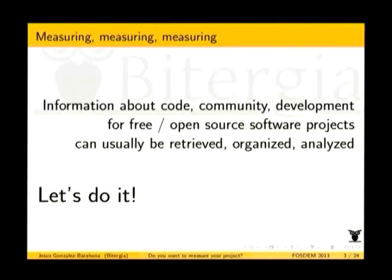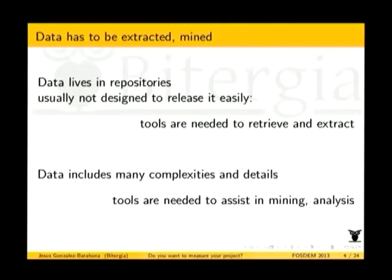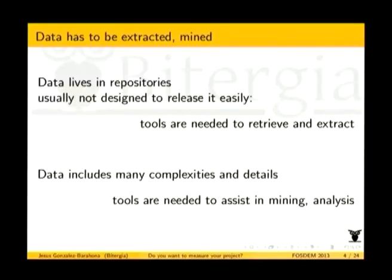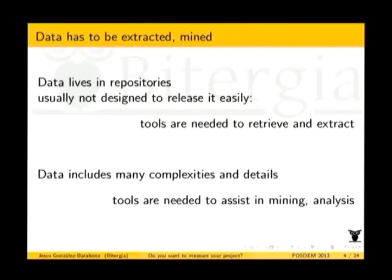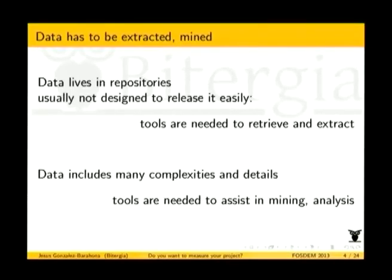The problem with data in free software repositories is that first of all it lives in repositories which were not designed to be mined — they were designed to do development — and getting the information out of them is not always easy. Depending on the repository, in some cases it's pretty easy, in others it's quite difficult. So we need tools to retrieve that information; that's basically what Metrics Grimoire does. Metrics Grimoire extracts data from repositories like Git or Bugzilla and puts it into a database.